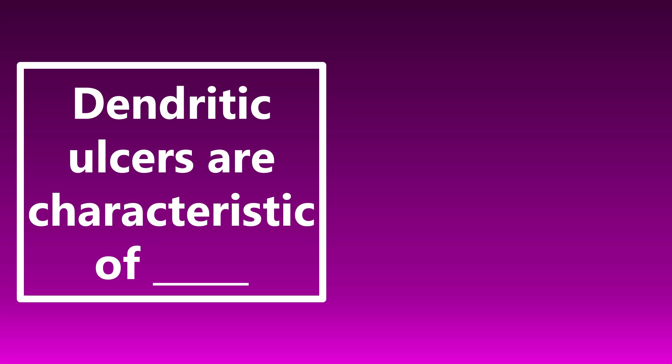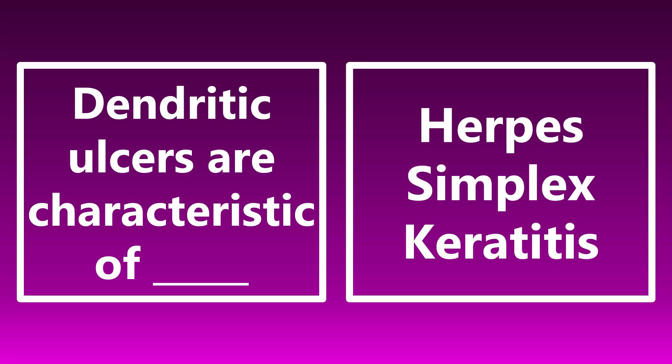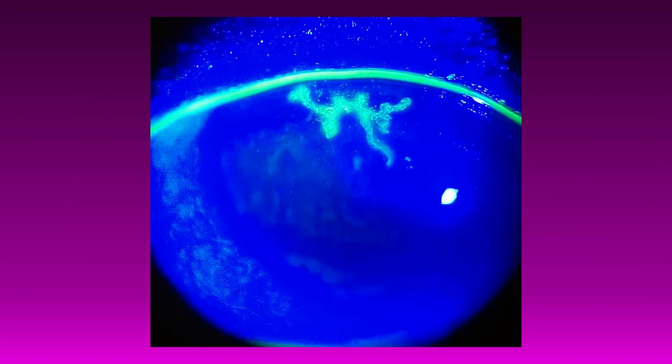Dendritic ulcers are characteristic of herpes simplex keratitis. These dendritic ulcers are seen on a fluorescein stain of the eye. This is a high-yield fact as well as a high-yield picture — seeing a dendritic-appearing ulcer on fluorescein stain is a sign of herpes simplex keratitis.